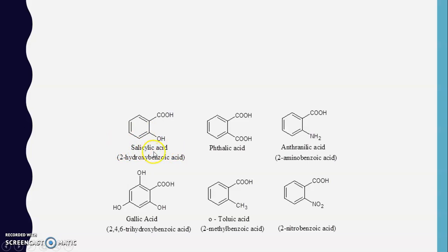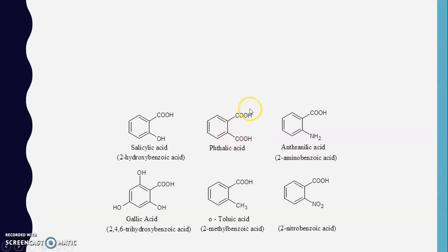Salicylic acid is an example: the benzoic acid skeleton with a hydroxyl group at the ortho position gives salicylic acid (common name), or 2-hydroxybenzoic acid (IUPAC name). Phthalic acid has two carboxylic acid groups connected at the ortho position to each other on the benzene ring; since two carboxylic acid groups are connected to the ring, it is a dicarboxylic acid.